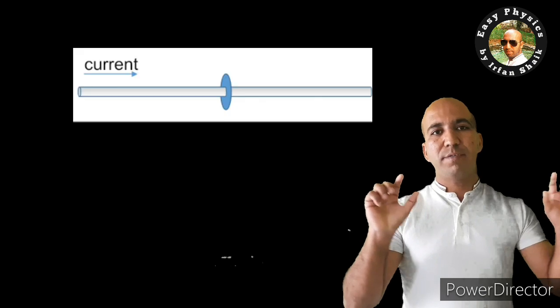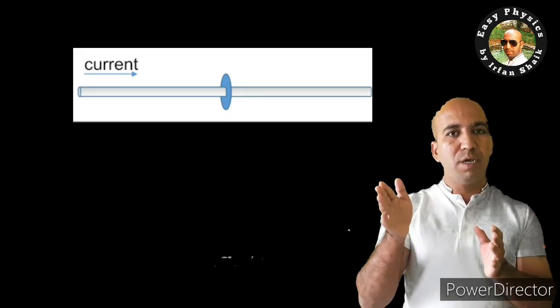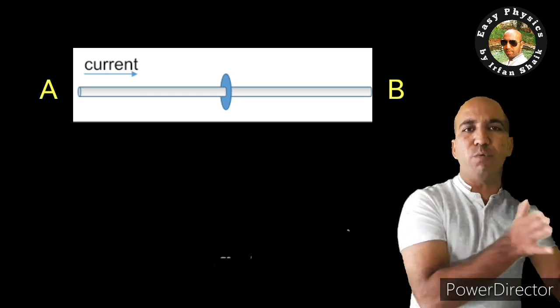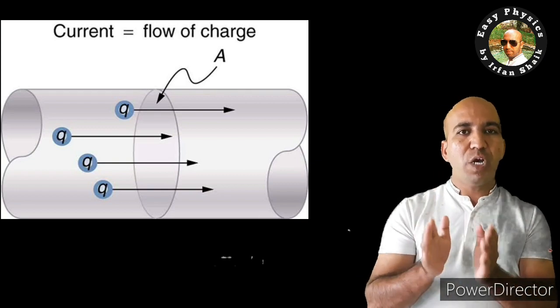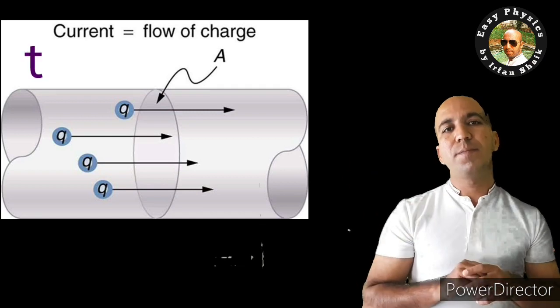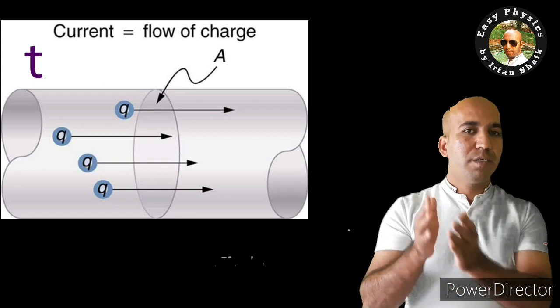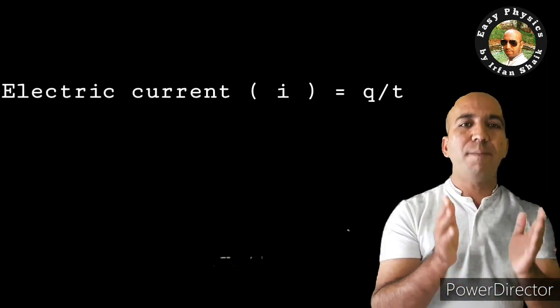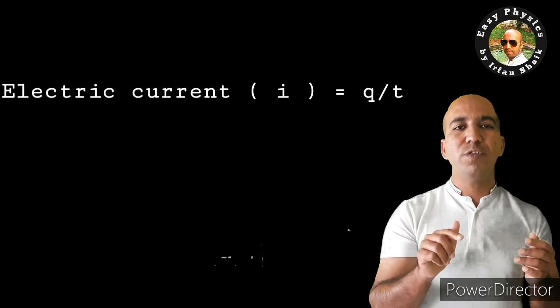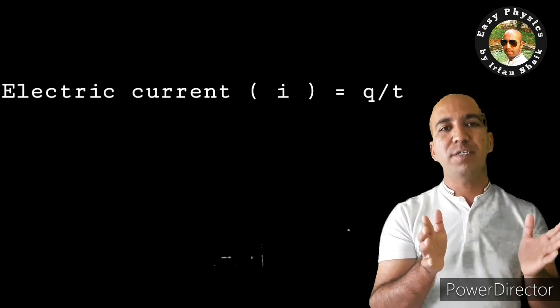Let us understand how charge flows from one point to another in a conductor. Consider a small wire with two ends, A and B. Suppose a charge Q is moving through this wire from A to B, and the time taken is t. The electric current is given by the rate of charge: electric current I equals charge Q upon time t, so I = Q/T. This is the formula to find the current moving in a conductor.